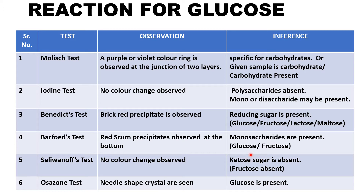The sample could be glucose or fructose. Glucose is an aldose sugar and fructose is a ketose sugar. To differentiate between aldose and ketose sugars, we perform the Seliwanoff test. Since the given sample is glucose, there is no change observed — glucose is an aldose sugar, so ketose sugar is absent. While performing the osazone test, needle-shaped crystals will be obtained.